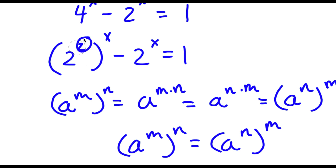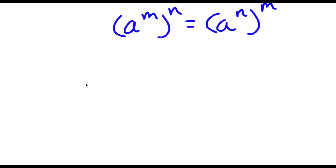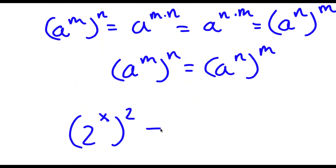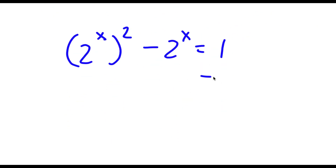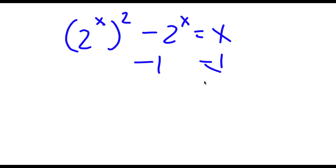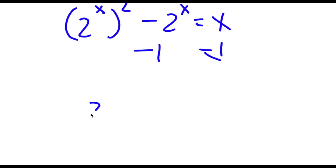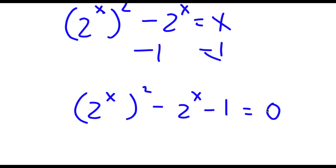So in this case we can think of 2 as m and x as n. If I switch these two, I get 2 to the power of x to the power of 2, minus 2 to the power of x is equal to 1. Now I'm going to subtract 1 from both sides. These cancel out, and now I'm left with 2 to the power of x, squared, minus 2 to the power of x, minus 1 is equal to 0.